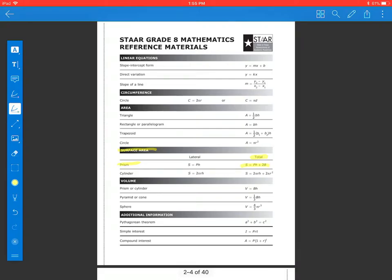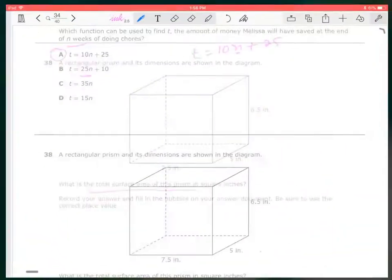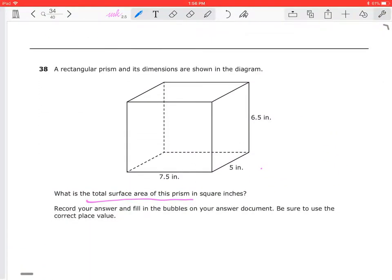And we're not looking at lateral, we're looking at total. So total is going to be S is equal to pH plus 2B.